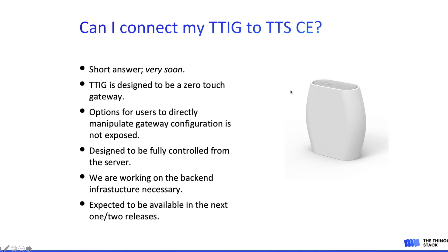A very hot topic on our forum is: can I connect my Things Indoor Gateway to The Things Stack Community Edition? The short answer is: very soon. The Things Indoor Gateway is designed to be a zero-touch interface gateway, meaning we do not want users to go through a lot of hassle to configure the gateways, so many direct configuration options are not exposed. It's designed to be fully controlled from the server side — all you have to do is plug in your gateway, authenticate it, set the Wi-Fi password, and it should connect to the server you want. This requires some backend infrastructure work, which we are working on at the moment and is expected to be available in the next couple of releases.